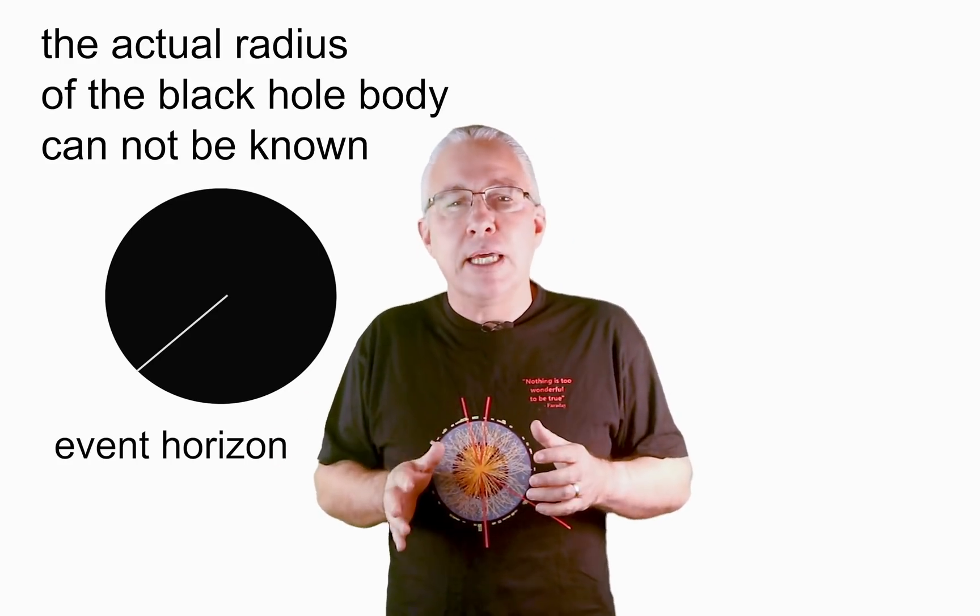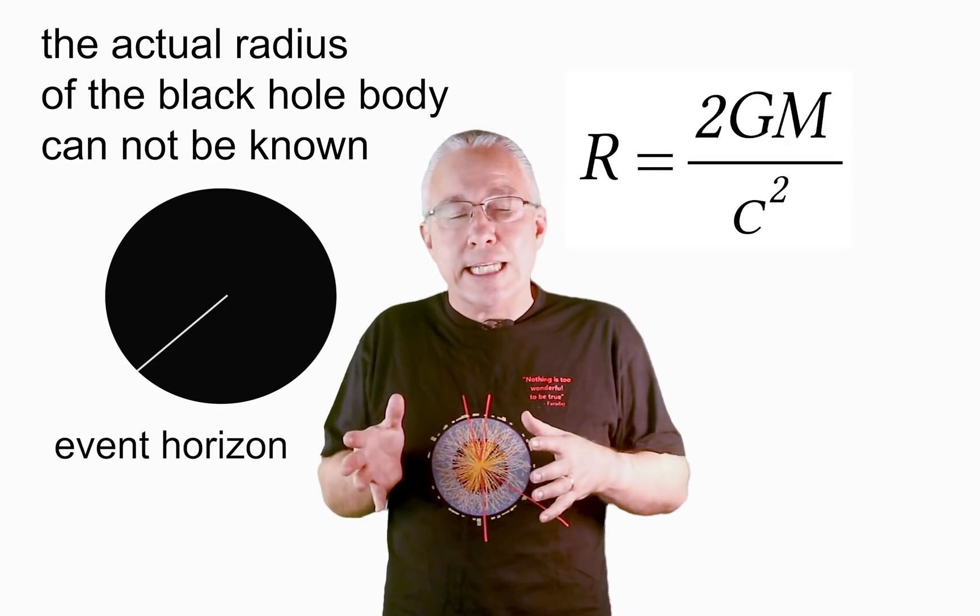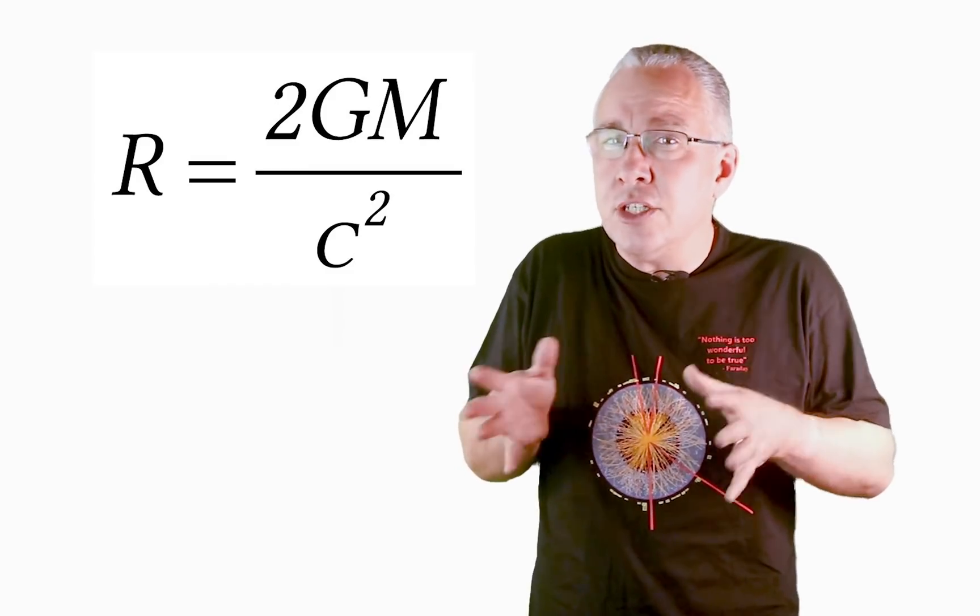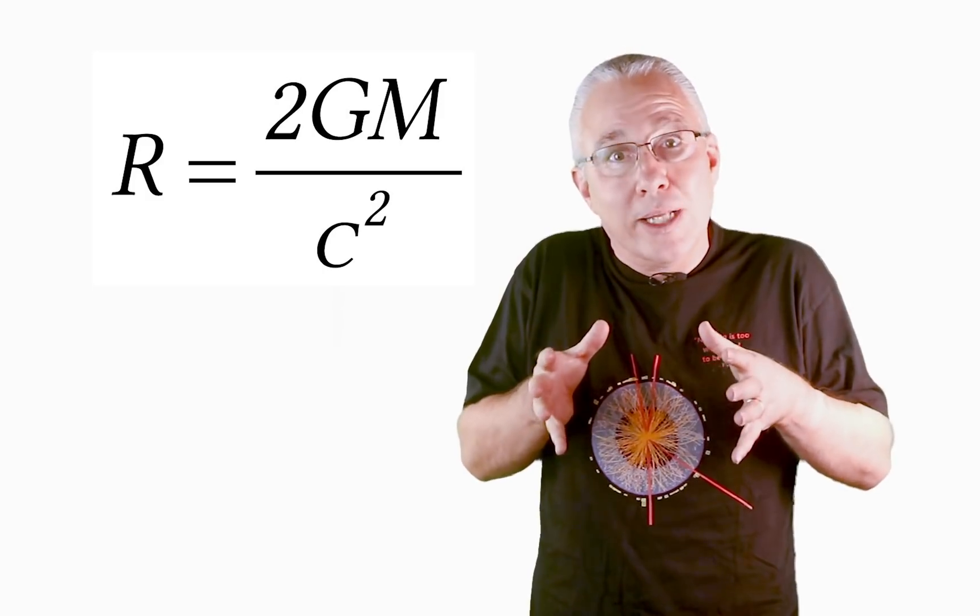Now, a definition that is often quoted is that a black hole is a body that is so massive that its resultant gravity is therefore so strong that not even light can escape it. Now the distance from which the black hole, which marks the boundary where the light can or cannot escape, is called the event horizon. Now this radius of this event horizon is known as the Schwarzschild radius, and it's dependent on the mass. Now this formula not only tells us the conditions of the black hole, but it also tells us the limit of how small our black hole can go.